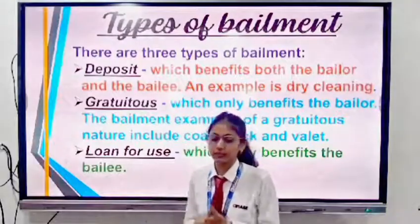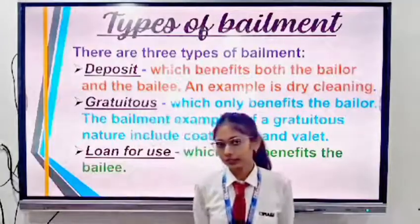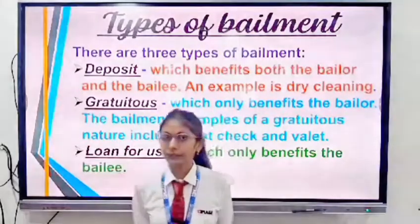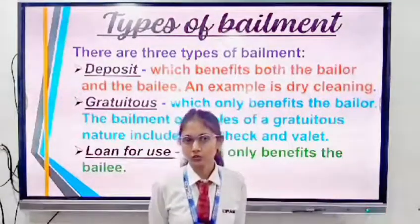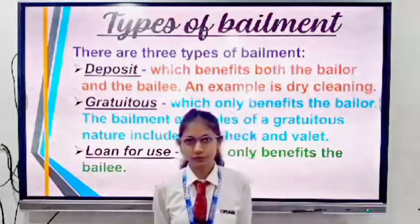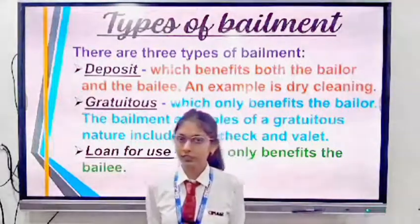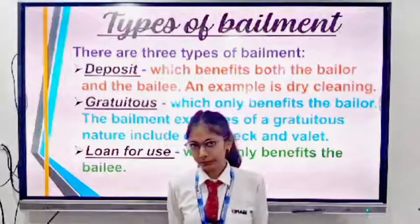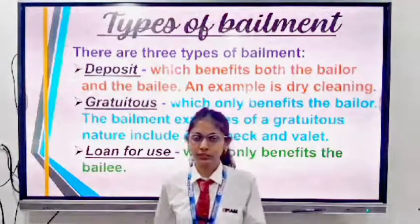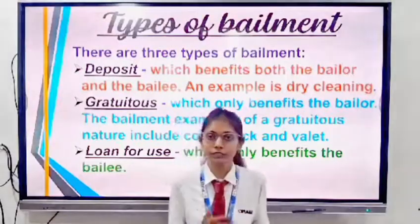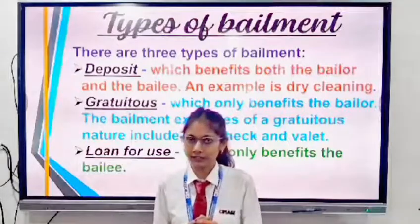The second type is gratuitous bailment, in which only the bailer is getting the benefit. For example, a person A has a car and wants to keep it safe while going out of station, so he gives it to his friend B. B doesn't actually need the car but keeps it as a favour due to their friendship. In this case, A gets the benefit that his car will be in safe hands.